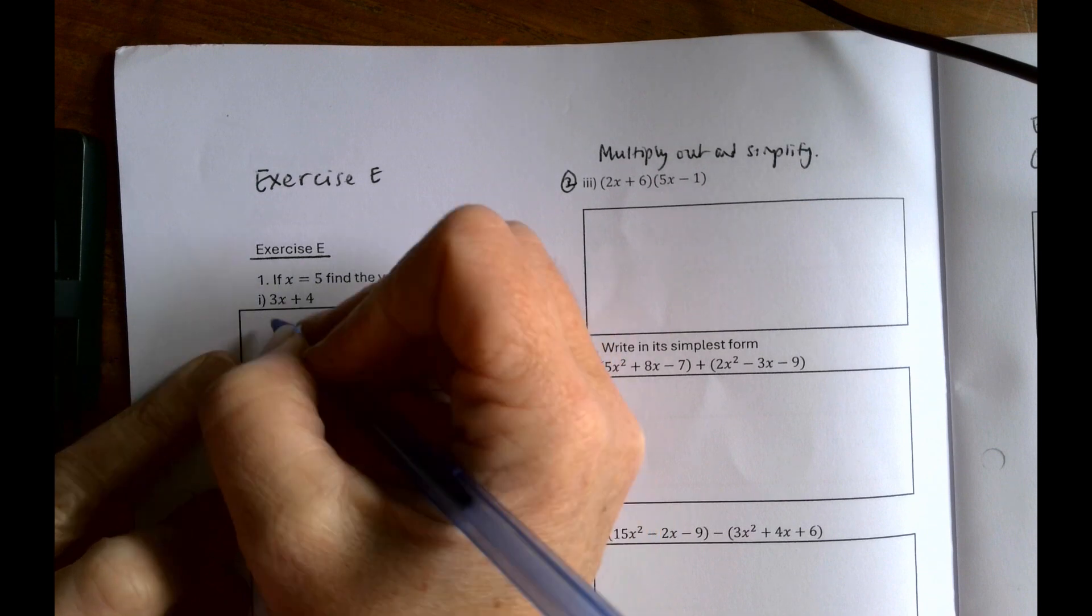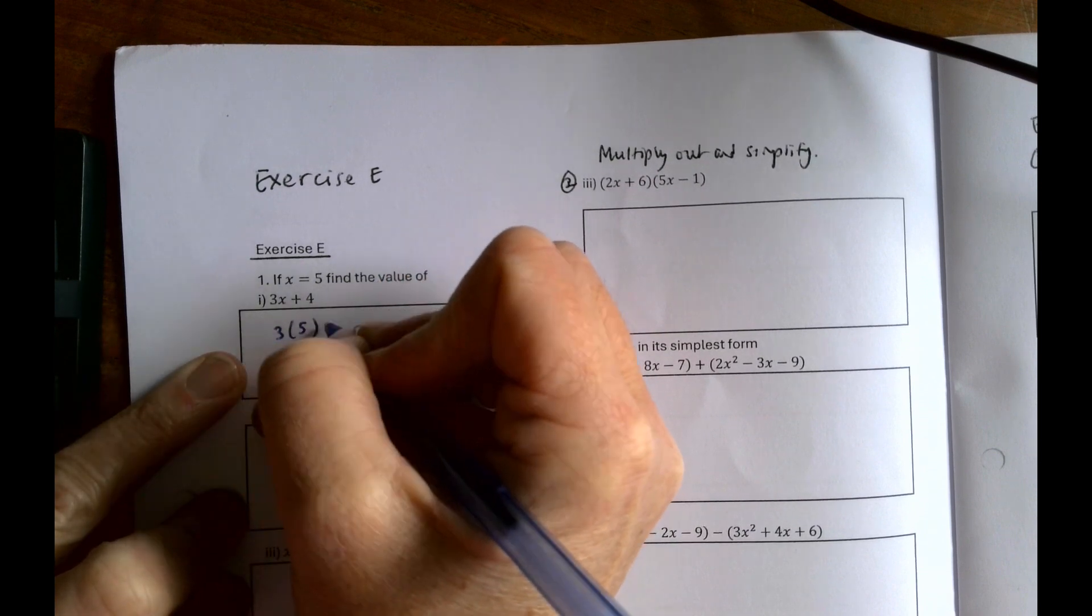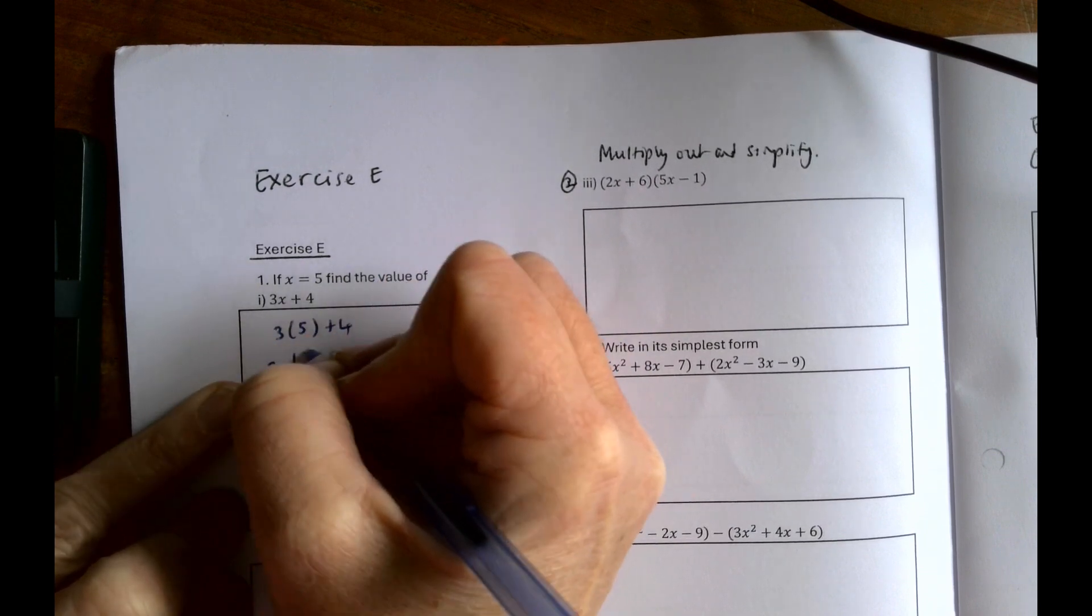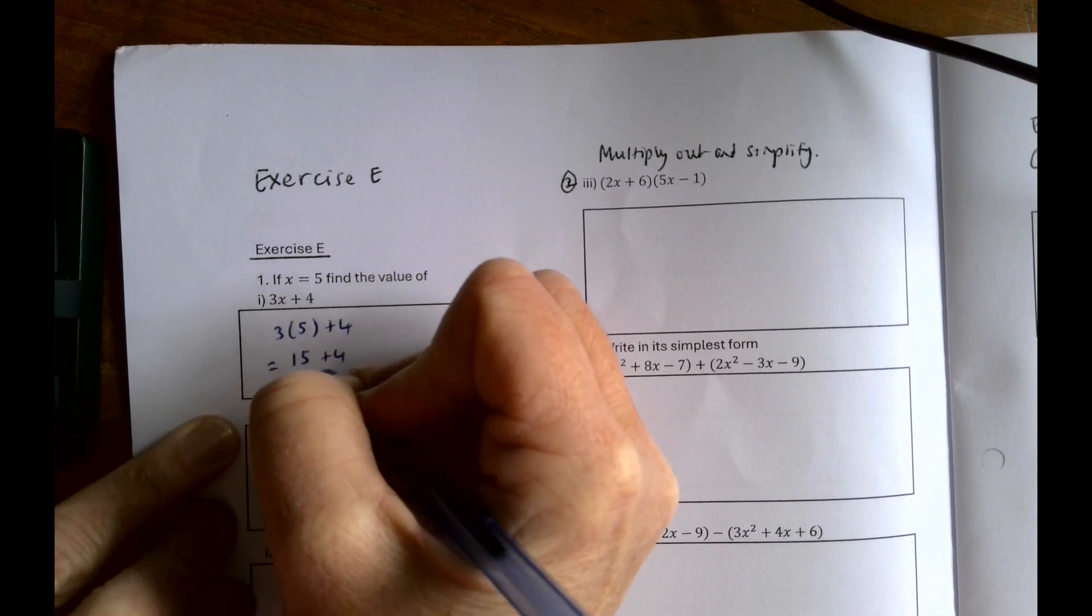If x equals 5, find the value of 3x plus 4. So we're just subbing in x equals 5, so 15 plus 4, which is 19.